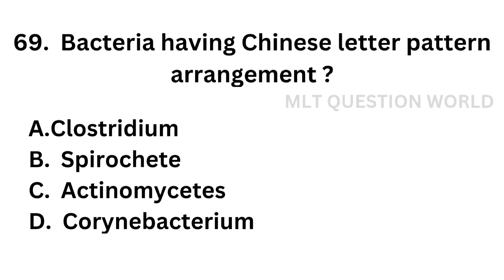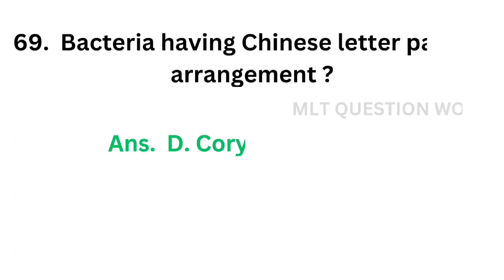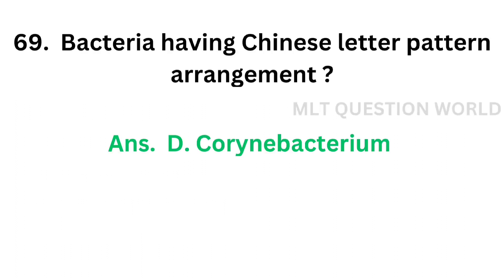Question number 69: Bacteria having Chinese letter pattern arrangement — Option A: Clostridium, Option B: Spirochete, Option C: Actinomycetes, Option D: Corynebacterium. The correct answer is Option D, Corynebacterium. Corynebacterium has a Chinese letter pattern arrangement.